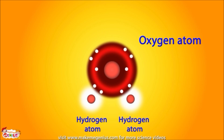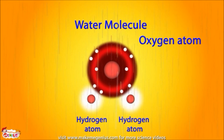In this way, the hydrogen atom's requirement is also fulfilled, as they can fill their shells to their capacity of two electrons in their valence shells. By combining together, they become water molecules.